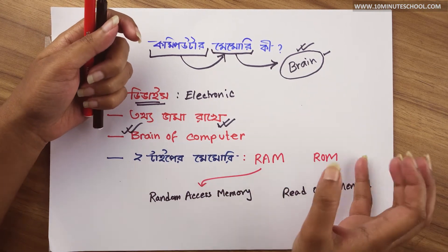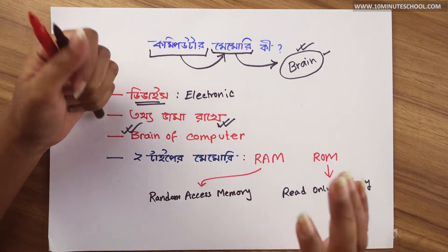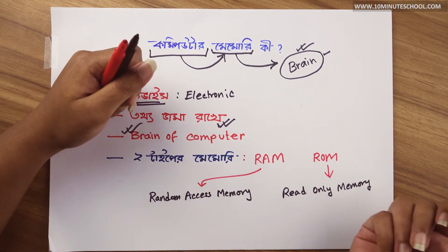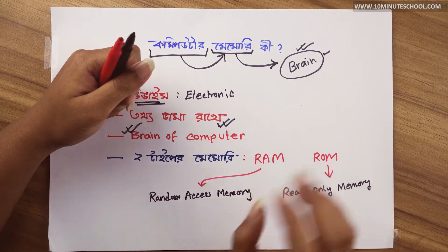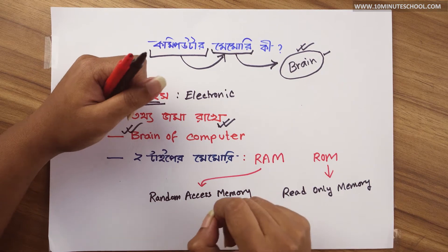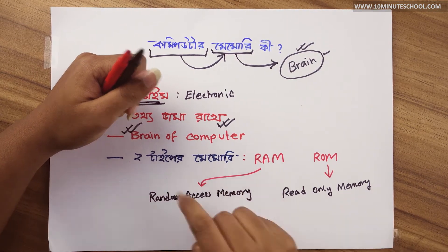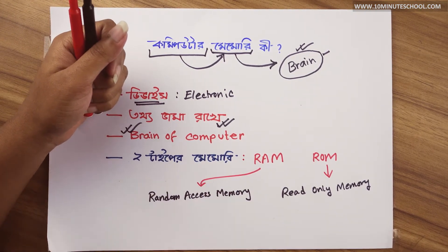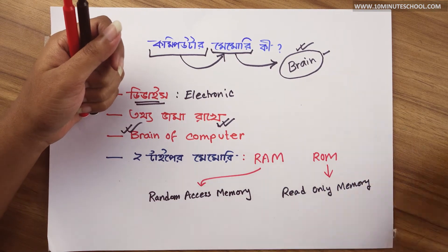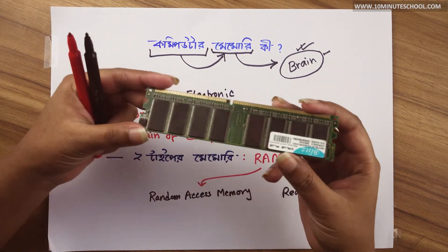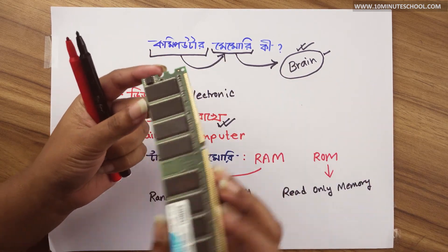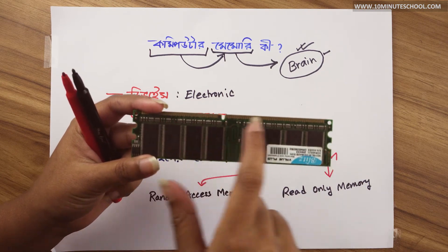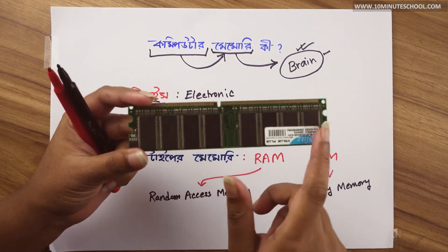You can also know more. The computer is connected to the computer. You can use the memory, you can save it. You can access it. RAM is a good thing. This is a circuit board. If you look at the same thing, there is a connection, there is a bus.